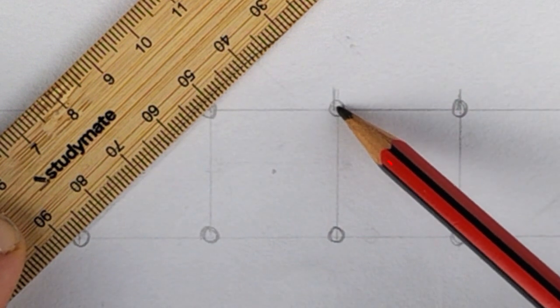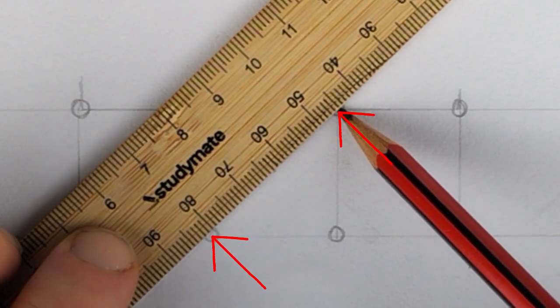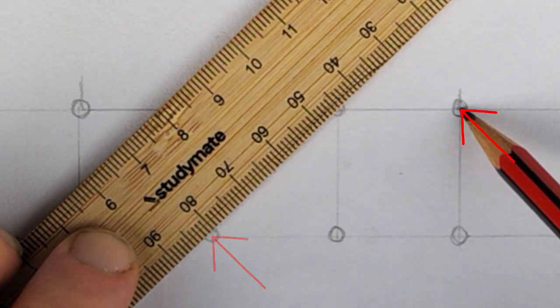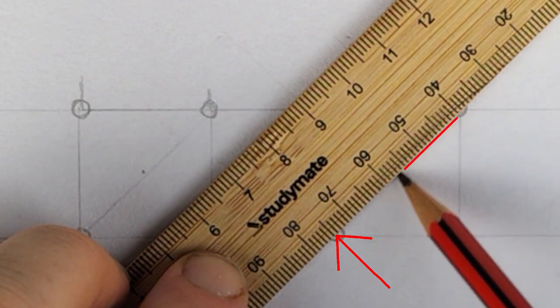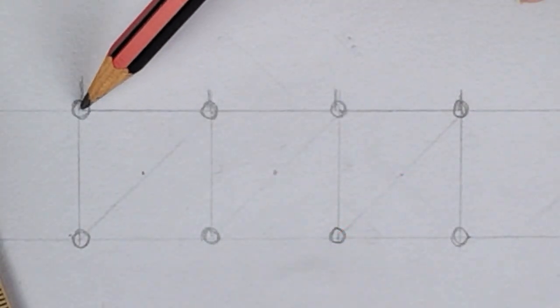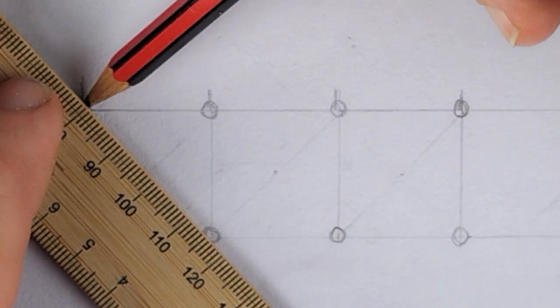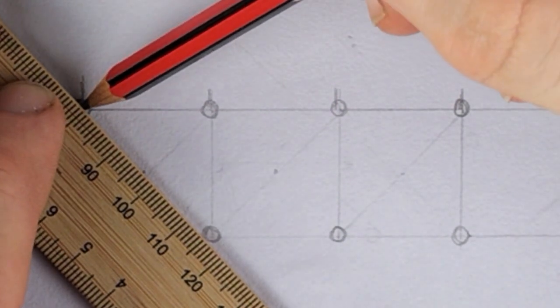Place your pencil tip in the center of one of the circles. Then place the edge of your rule up against the tip. Then line that rule through the center of the circle exactly diagonal to the first one and then rule a line between the circles. Do this for each square.